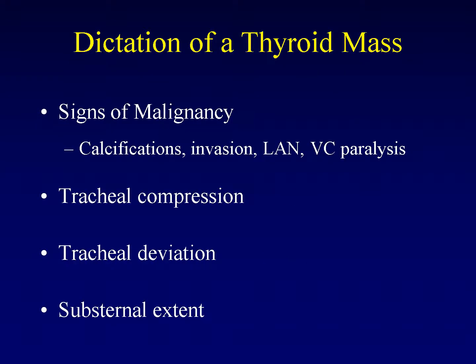When dictating thyroid masses, you should include: signs of malignancy such as calcifications, invasion, and lymphadenopathy; vocal cord paralysis; tracheal compression characterized as mild, moderate, or severe; tracheal deviation characterized as mild, moderate, or severe; and substernal extent. These are the key elements that belong in a dictation of a thyroid mass.